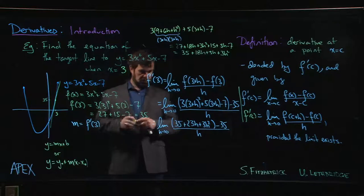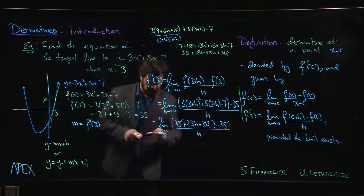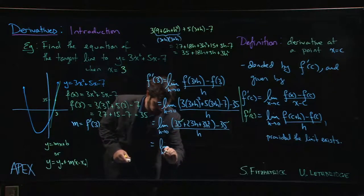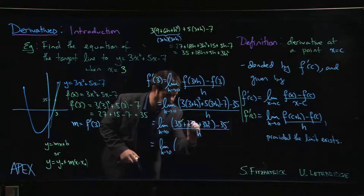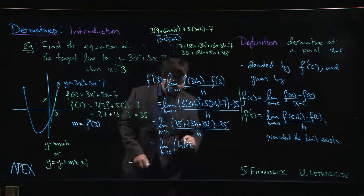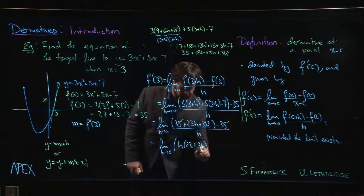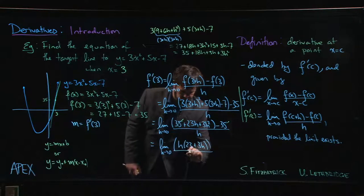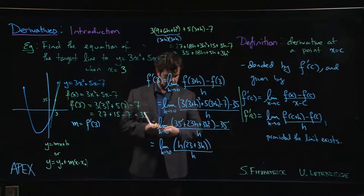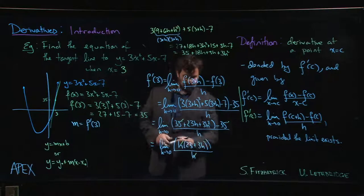And since everything's a multiple of h, it's a little bit easier now, right? We can cancel the 35s, we can factor an h from what's left over. Okay, we get h times (23 plus 3h), didn't really need those extra parentheses, over h. And now that we factored out that h, we can cancel with the one on the bottom. We can let h go to zero.